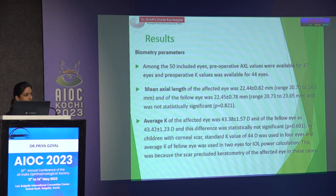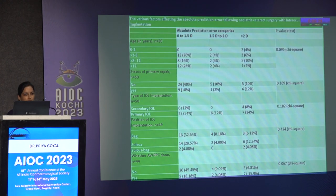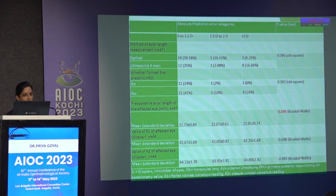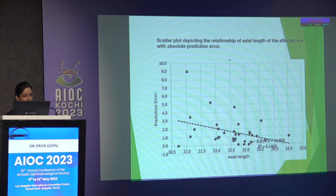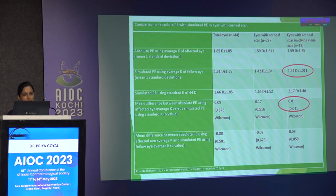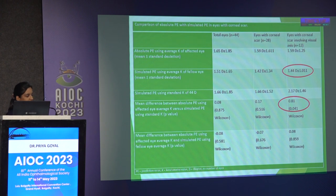Overestimation of IOL power occurred in 35 eyes with a mean of 1.6 diopters; underestimation in 10 eyes with a mean of 1.07 diopters. No statistically significant difference was found between axial length or average keratometry of affected versus fellow eye. Among the factors studied, no significant p-value was found for age, primary repair status, type or position of IOL, whether PPC was done, method of axial length measurement, presence of corneal scar, or keratometry values. The only significant p-value was found for pre-operative axial length — smaller axial length was associated with higher prediction error.